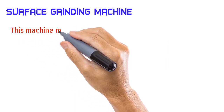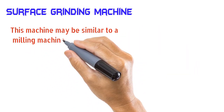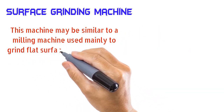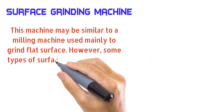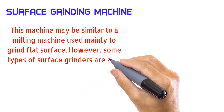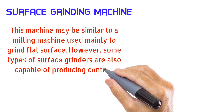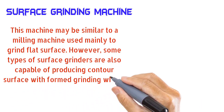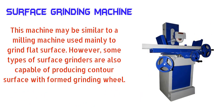The surface grinding machine may be similar to a milling machine and is used mainly to grind flat surfaces. However, some types of surface grinders are also capable of producing contour surfaces with a formed grinding wheel.